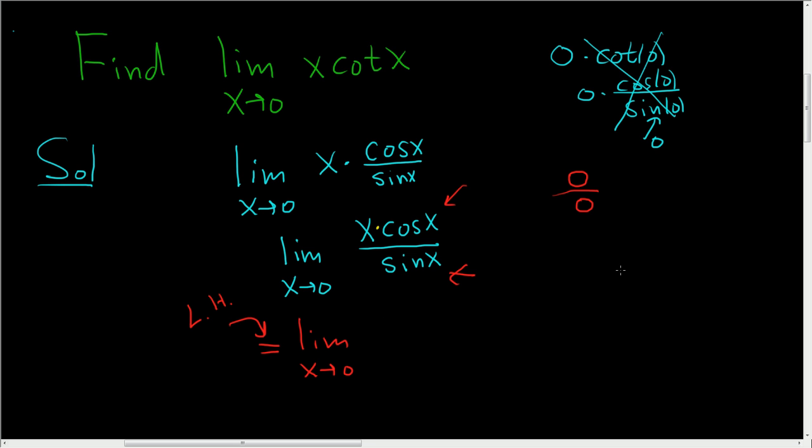Recall the product rule says if you have fg, it's the derivative of the first, so f prime times the second, which is g, plus the first, which is f, times the derivative of the second, which is g prime.